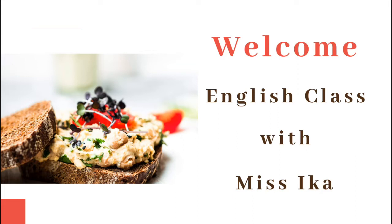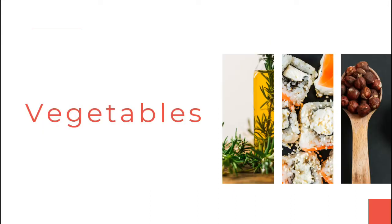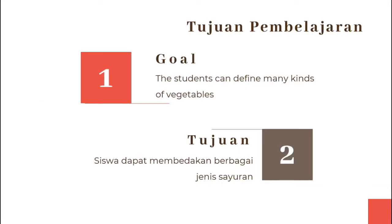Seperti yang Miss Ika info di pertemuan sebelumnya, untuk bulan ini kita akan belajar mengenai food atau makanan. Minggu lalu kita sudah belajar mengenai fruits atau buah-buahan. Hari ini kita akan belajar mengenai vegetables atau sayur-sayuran. Tujuan pembelajaran kita adalah the students can define many kinds of vegetables — anak-anak dapat membedakan berbagai macam jenis sayuran. So tanpa banyak cerita, let's get started!